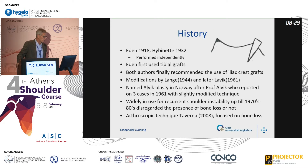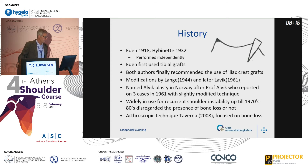The Eden publication was dated 1918, and the Hybinette — a small variation of the same — in 1932, independent from each other. This was before the internet, you know. They used first tibial grafts, but then both authors recommended using iliac crest grafts later on.